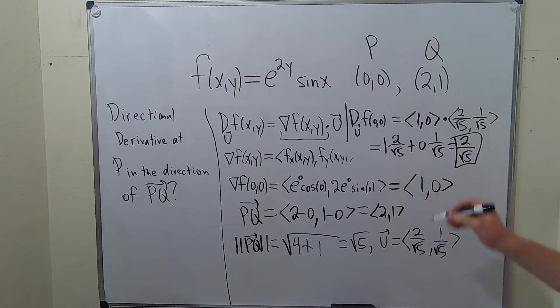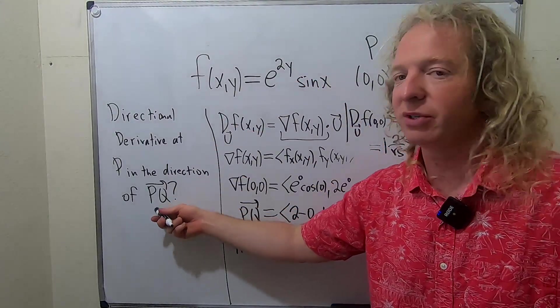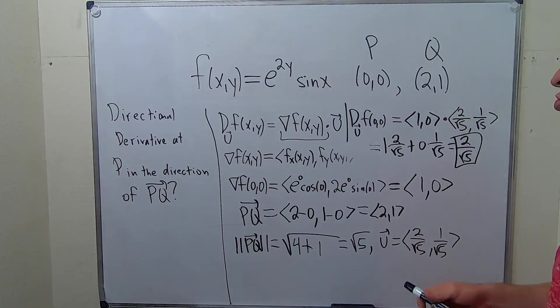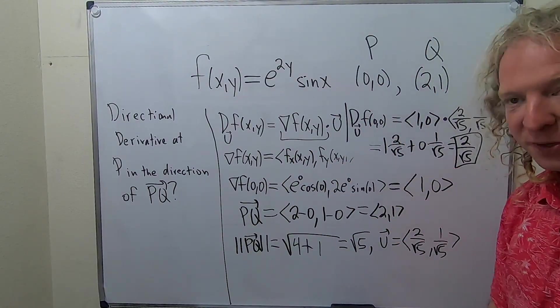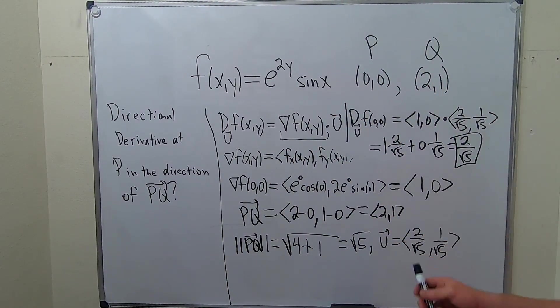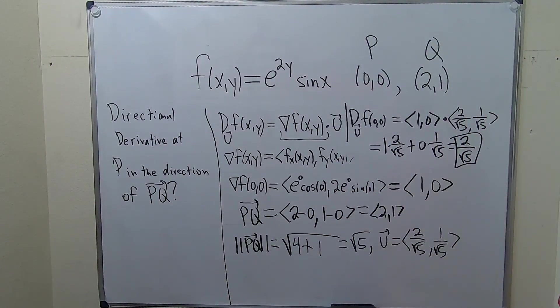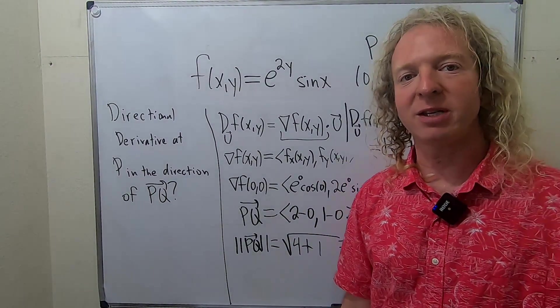There is the directional derivative of this function at 0, 0 in the direction of this vector. It's the rate of change of this function at this point in the direction of this vector. It's not hard. It's just a lot of formulas and just always take your time when you're going through problems like this. I hope this video has been helpful. Take care.